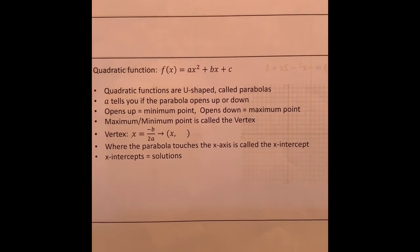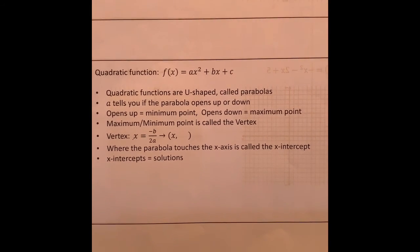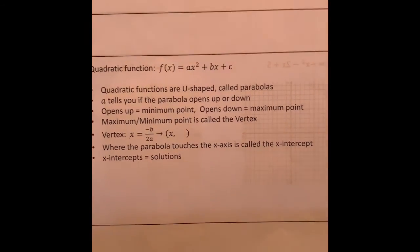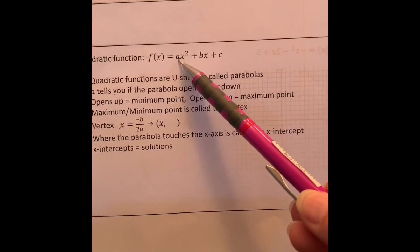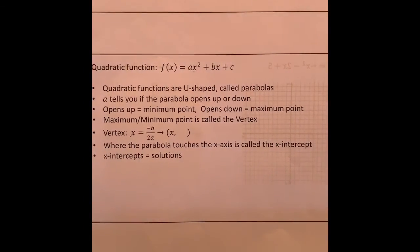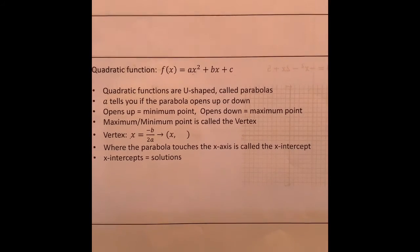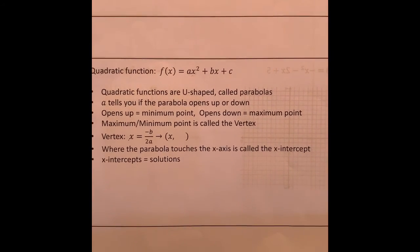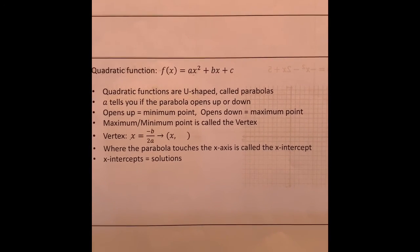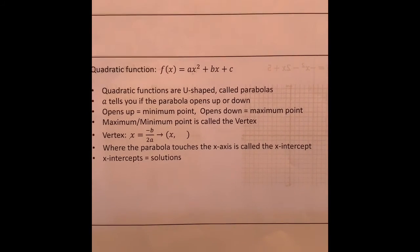These quadratic functions that we've been working with are U-shaped, so anytime you graph them you will get a U-shape, and these U-shapes are called parabolas. The 'a' value in standard form — the number that sits in front of the x squared — is going to tell us whether the parabola opens up or opens down. If it's a positive number it opens up; if it's negative it opens down. If it opens up it has a minimum point, and if it opens down it has a maximum point.